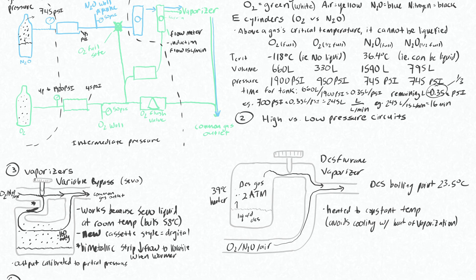Des vaporizers on the other hand output the set percentage, or they're calibrated to percent. Whether you are at sea level or you are on top of a mountain, you set this dial to two percent - or you would set it to six percent if you're using des which would be more reasonable - it is always going to be outputting six percent.